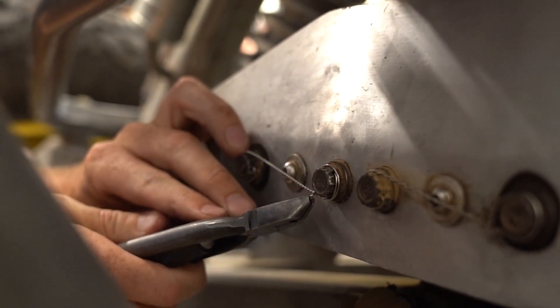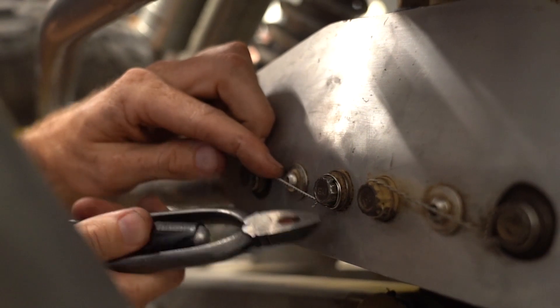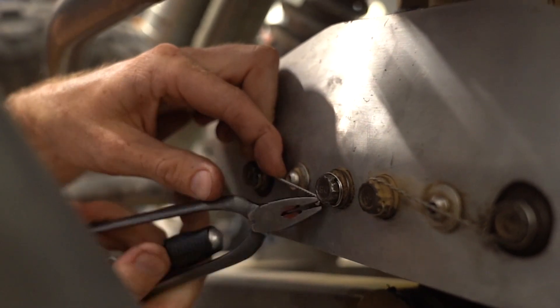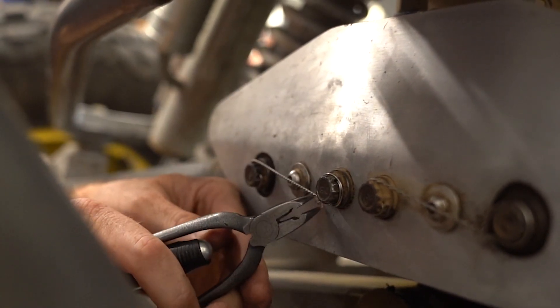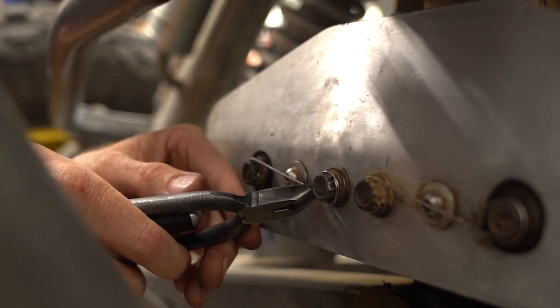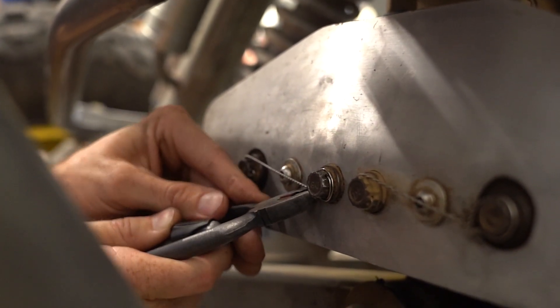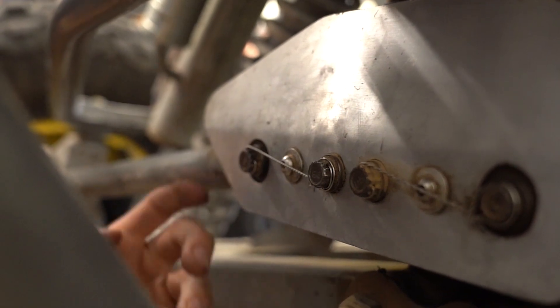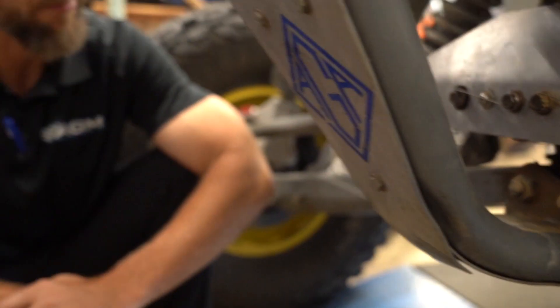You will thank yourself later for that because by folding it back on itself, you get rid of this sharp end that you could catch a body part on while you're at a pit or while you're servicing the vehicle. And that's it. How to safety wire a bolt.